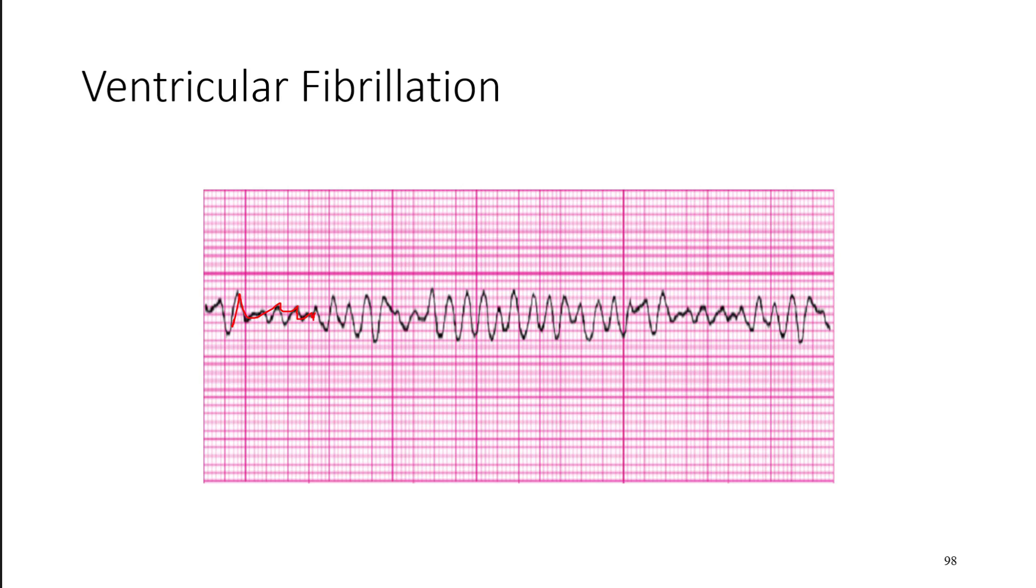And the only way to get someone out of V-fib is to defibrillate them. That's why you see those AEDs, like are such an important thing. There are two different types. There are coarse V-fib where the waves are very large. This would be an example of coarse V-fib. And then there is fine V-fib where you've got smaller waves.